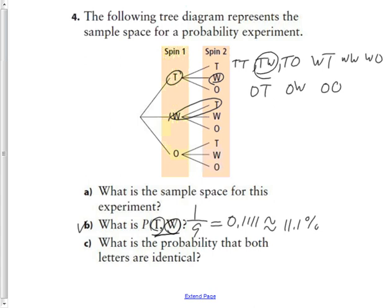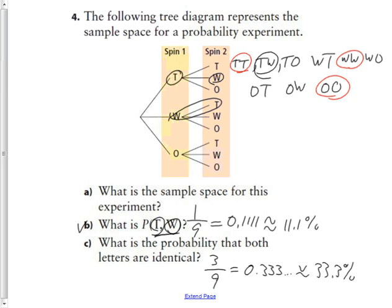What is the probability that both are identical? Looking at our sample space, the identical outcomes are TT, WW, and OO. So we have three favorable outcomes out of nine possible, which is three-ninths. Dividing three by nine gives 0.3̄, or approximately 33.3%.